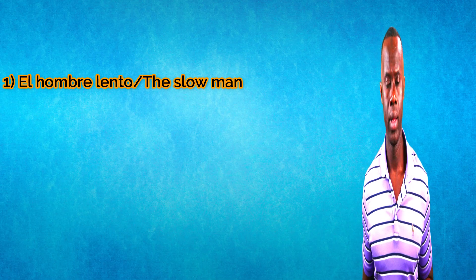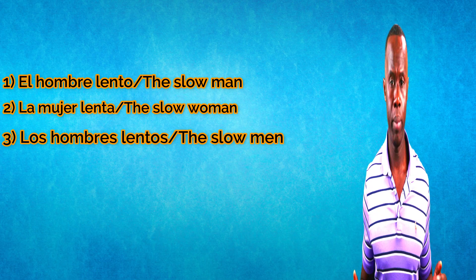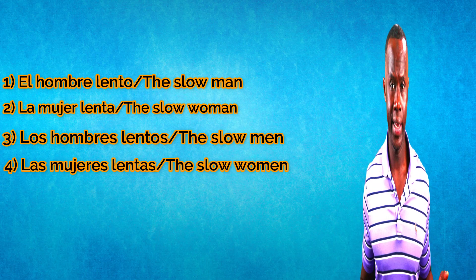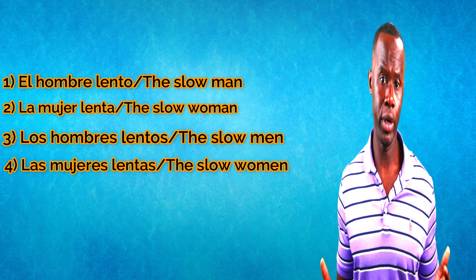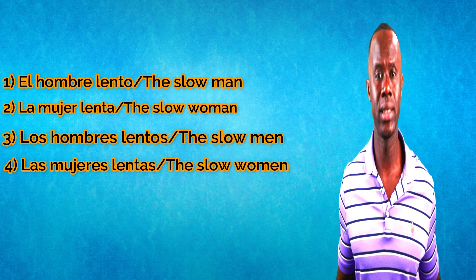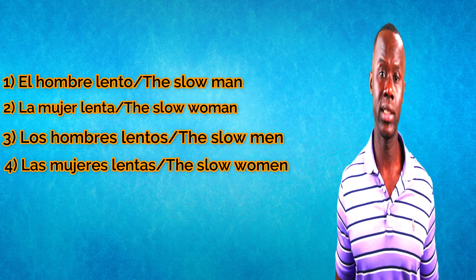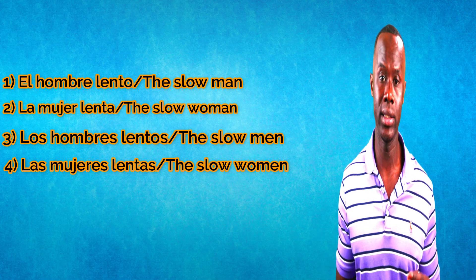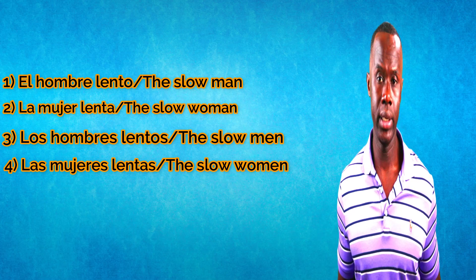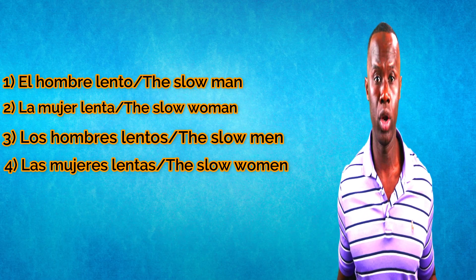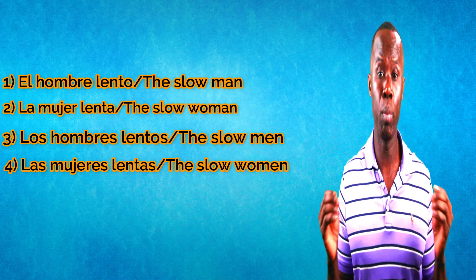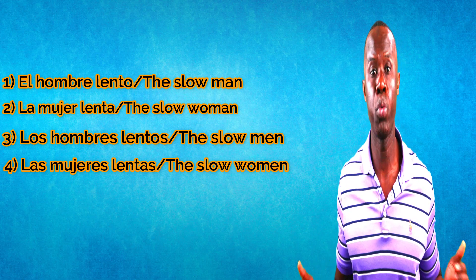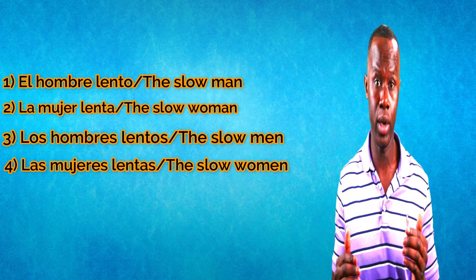Let's see some examples: 'el hombre lento,' 'la mujer lenta,' 'los hombres lentos,' 'las mujeres lentas.' Lento is masculine and singular because hombre is masculine and singular. Lenta is feminine and singular because mujer is feminine and singular. Lentos is masculine and plural because hombres is masculine and plural. And lentas is feminine and plural because mujeres is feminine and plural.